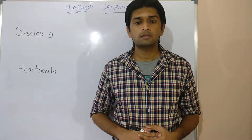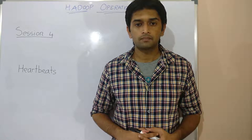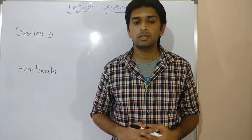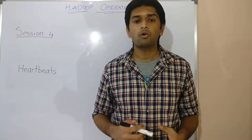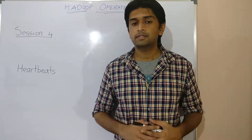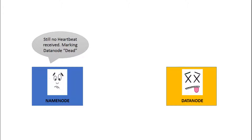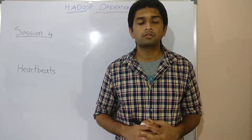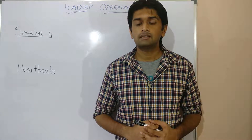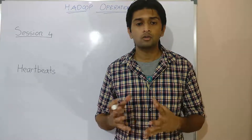Safe mode during startup also prevents the name node from prematurely replicating under-replicated blocks before all blocks have been registered. If a data node skips sending consecutive heartbeats, the name node will mark it stale — meaning it is slow and will be prioritized less for read and write operations. If a data node misses sending heartbeats for an extended period of time, the name node will mark it dead. If a data node becomes dead, it can cause some blocks to become under-replicated, and the name node will schedule those blocks to be replicated to another active data node.